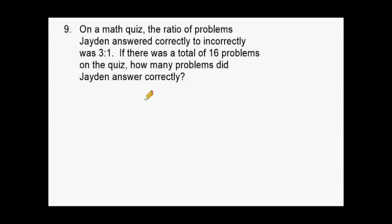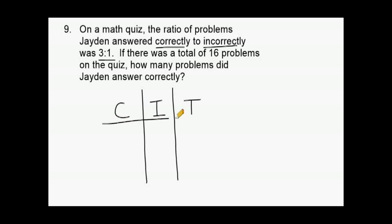On a math quiz, the ratio of problems Jaden answered correctly to incorrectly was 3 to 1. If there was a total of 16 problems on the quiz, how many did Jaden answer correctly? Using a ratio table with columns for correct (C), incorrect (I), and total (T): the given ratio is 3 correct and 1 incorrect, giving a total of 4. The problem states there were 16 total problems.